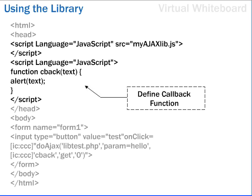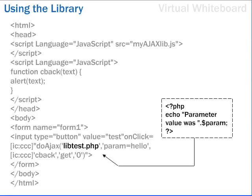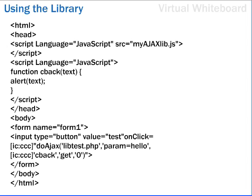Next, we need to define our callback function to deal with the value stored in the responseText property. For these examples, we'll simply display the returned text in an alert. Finally, we need to add an event handler call to our button. Our server-side script, libtest.php, simply echoes back the parameter sent as the second argument. The remaining parameters of the function call declare that the callback function is called CBAC, that we want to send an HTTP GET request, and that we expect the returned data to be in responseText. This listing shows the complete code of our revised HTML page.